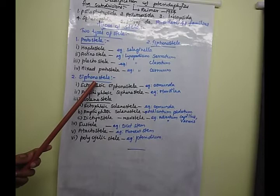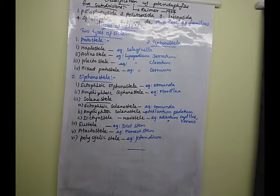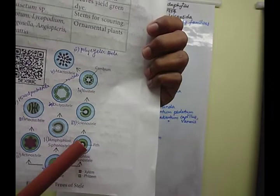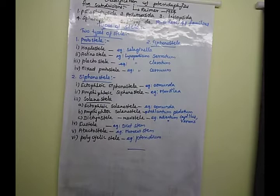The next type is siphonostele. Siphonostele means xylem surrounded by phloem, but the central region has pith present. The siphonostele comes under these types: ectophloic siphonostele, amphiphloic siphonostele, solenostele (which has three sub-types), dictyostele, eustele, atactostele, and polycyclic stele.